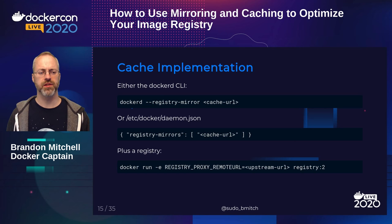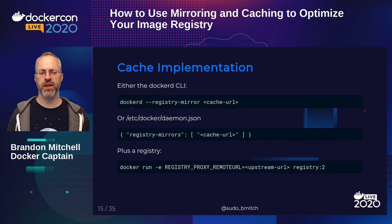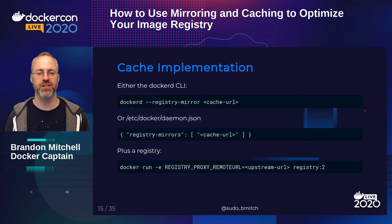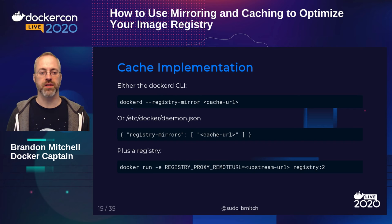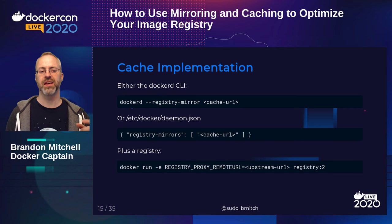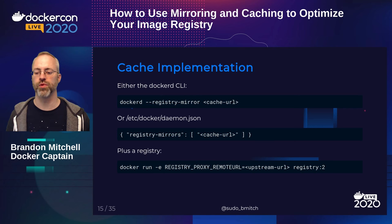The implementation has two parts. First, the Docker daemon needs to be told it has a cache using the --registry-mirror flag, either on the dockerd command line or in the daemon.json file. Second, you need to set up that cache using the registry image Docker provides, passing the proxy remote URL flag — that tells the registry it's acting as a pull-through cache, proxying requests upstream and caching those layers locally.